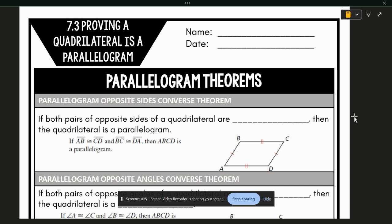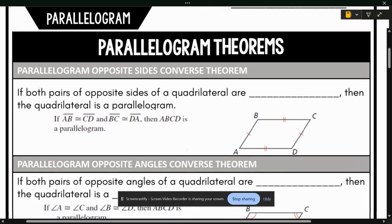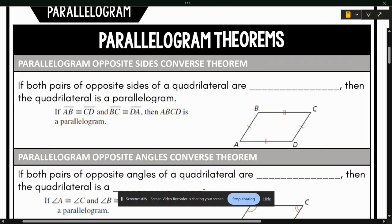The very first part is called the parallelogram opposite sides converse theorem. It states that both pairs of opposite sides of a quadrilateral are congruent.